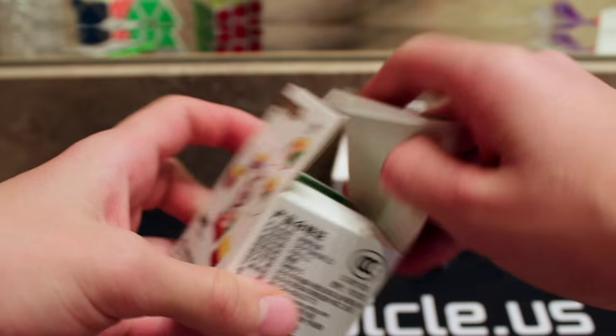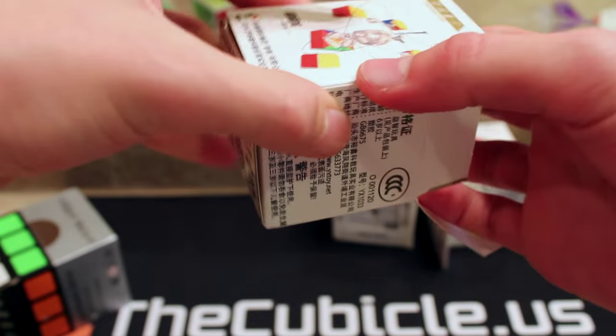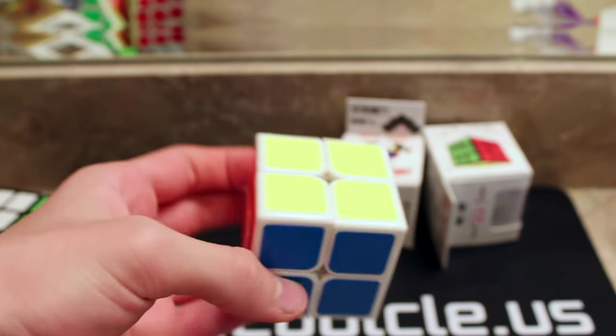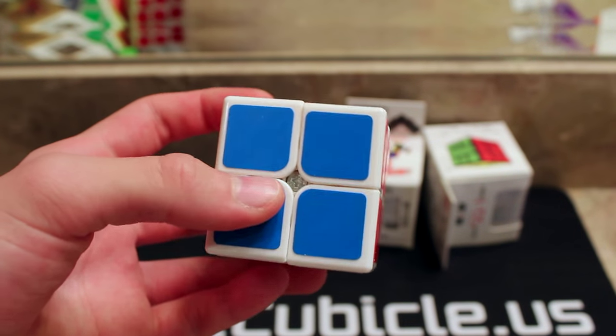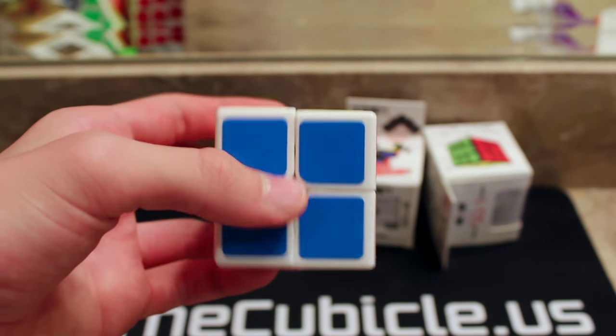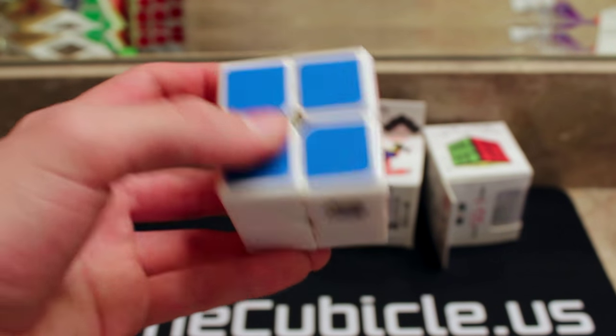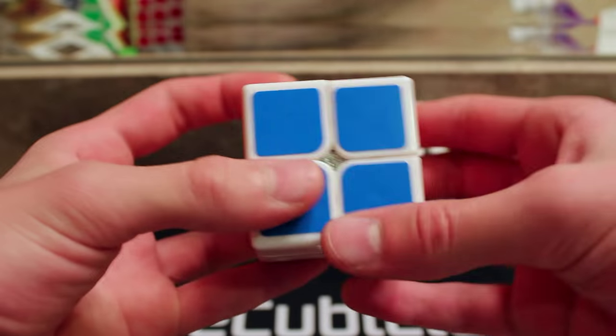Now let's look at the Yushin 2x2. And from what I've heard, the Yupo is better than the Yushin, but I ordered this one anyways just to like, you know, get it. And because I'm pretty good at 2x2, I feel like I should try everything just in case, you know, because I want to be as good as possible. So here we go.